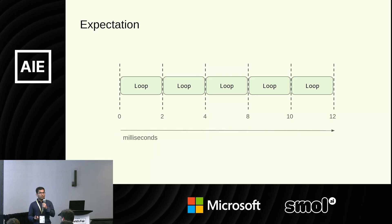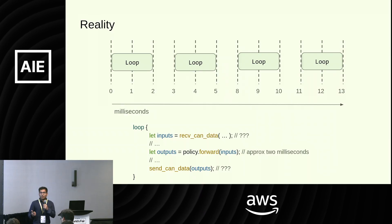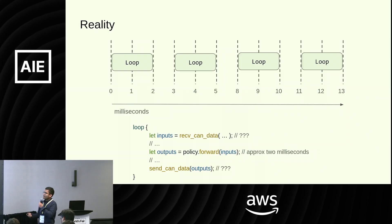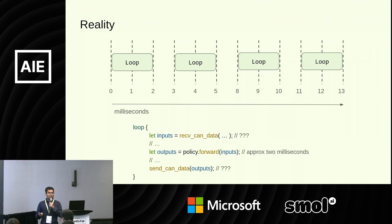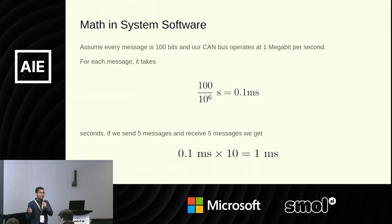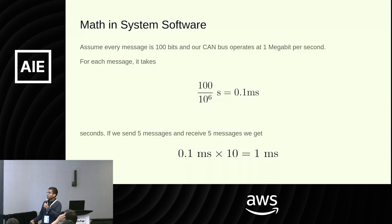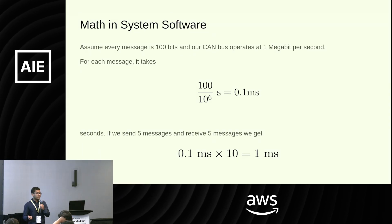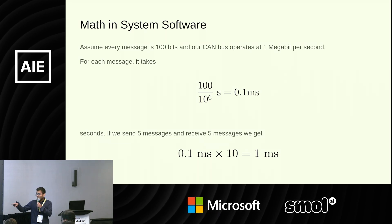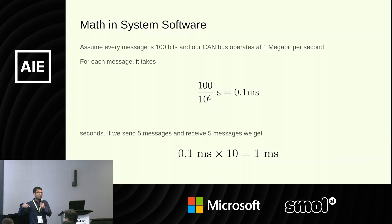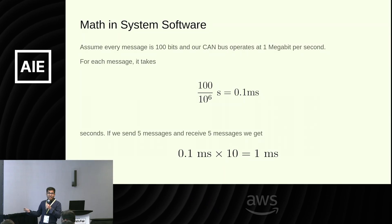But as soon as we deploy it on the robot, this is what happens — there's a gap every two milliseconds. What's going on? Well, at the edge of the loop we see question marks: we're transmitting and receiving CAN data. Let's say we have 100 bits per message and about 10 messages — five to be sent out, five to be received — giving us 1,000 bits total. For a CAN bus operating at one megabit per second, that's about 0.1 milliseconds per message, or one millisecond for 10 messages. You can see how even a small number of messages are saturating the CAN bus to the point that the loop time is on the same order as the transmission time, and this explains the one millisecond gap.